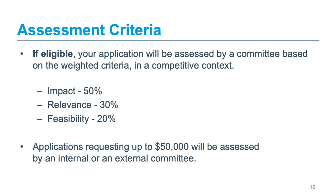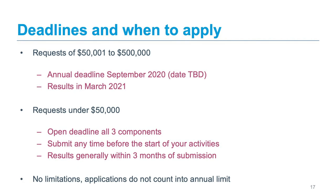Now let's look at the deadlines. For requests over $50,000 up to $500,000, the deadline is in September 2020 — the exact date is yet to be determined. This is the annual deadline and results will be available March 2021. For requests under $50,000, there is an open deadline for all three components of the Digital Strategy Fund — it's open all year. You can submit any time before the start of your activities and results are generally available within three months of submitting your request. For all requests to the Digital Strategy Fund in both categories, there are no limitations, and the applications you submit do not count into your annual limit for requests.